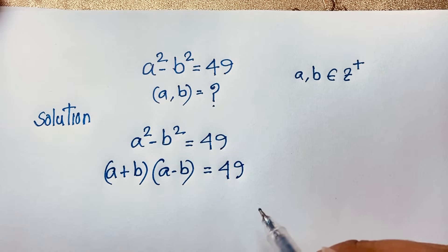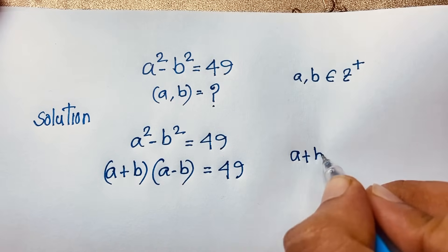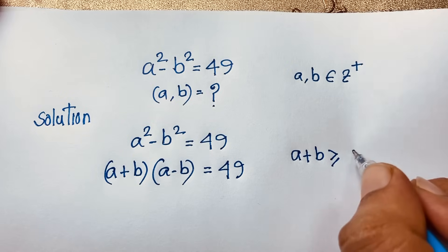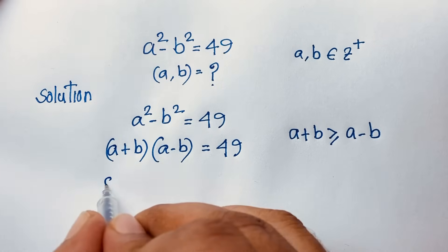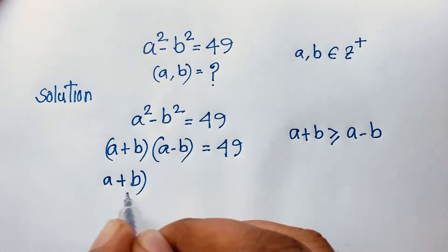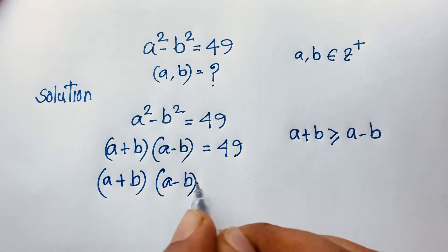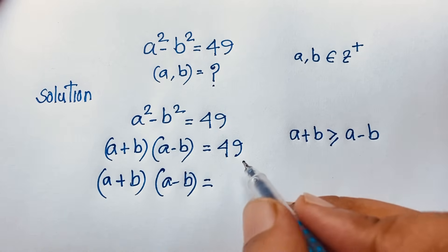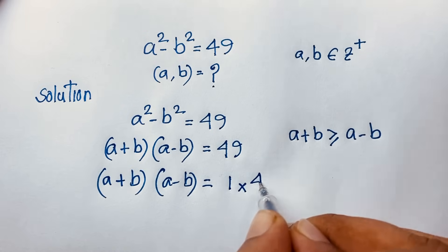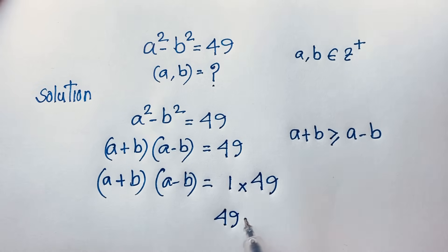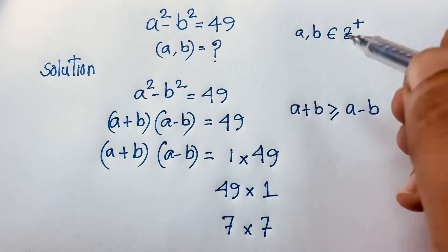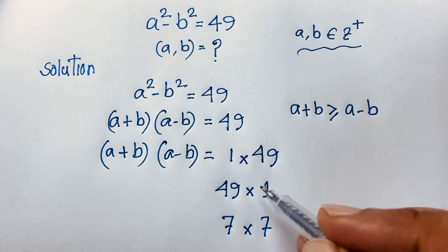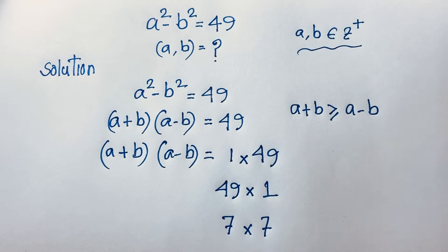At this moment, we can see that a + b is always greater than or equal to a - b. Now we'll find the factor pairs of 49: it can be 1 × 49, 49 × 1, or 7 × 7. Since a and b are positive integers, we only consider positive values.